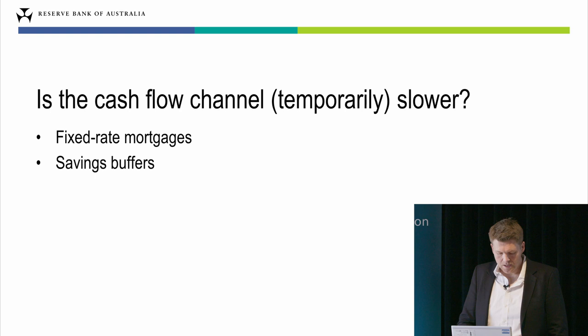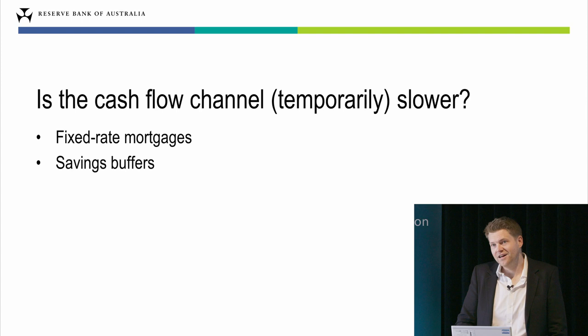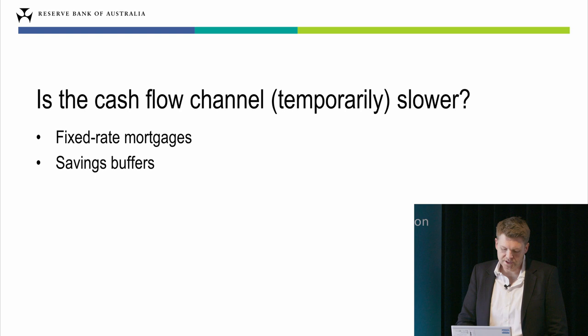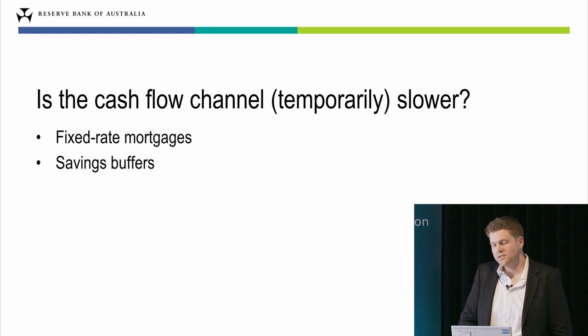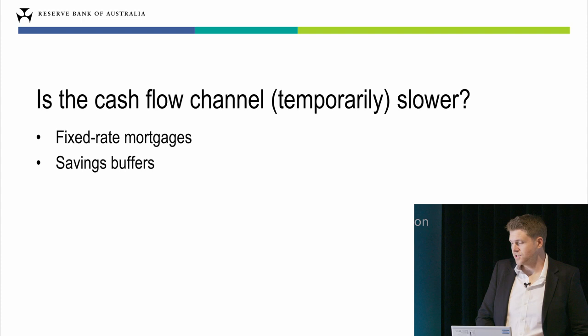The second temporary factor is that many households built up a stockpile of extra savings during the pandemic. Some mortgage holders may choose to draw down on those savings buffers rather than cutting back on consumption as their mortgage rates rise. If that happens, it will delay some of the effect of the cash flow channel relative to what we might have seen in the past. Whether households actually do this is a big source of uncertainty — we're getting some early evidence at the moment, but it's hard to be precise because we haven't really been in this kind of situation before.